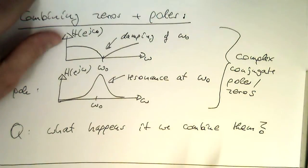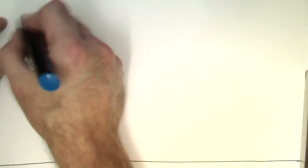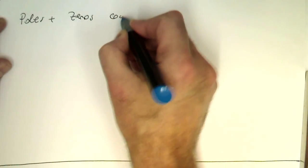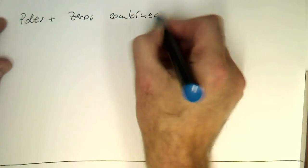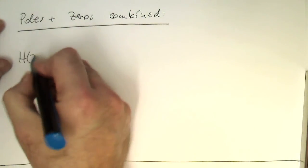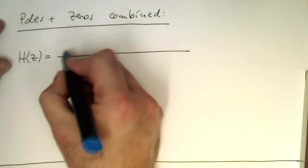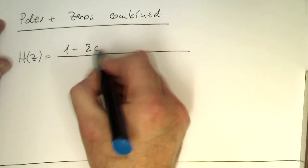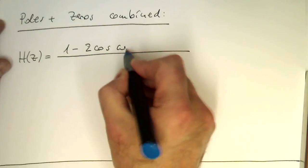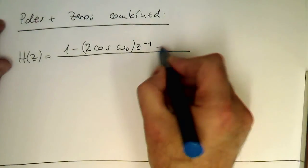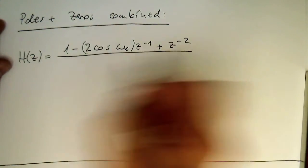So let's write down the full transfer function. So poles and zeros combined. And this gives us the following transfer function. So one minus two cosine omega zero z to minus one plus z to minus two because we've got no r here.